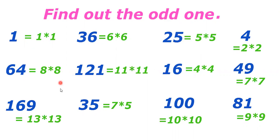121 as 11 into 11. In such a way you can write all numbers, but if you see 35, we cannot write as product of two same numbers. We can write as 7 into 5 or 1 into 35.